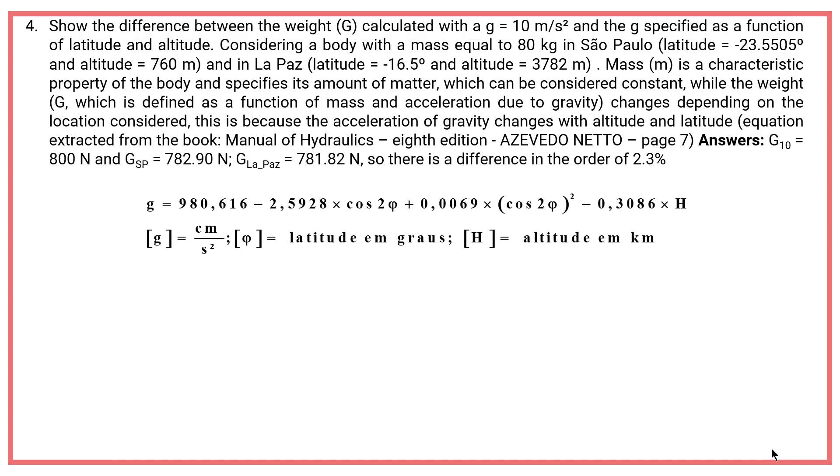Mass, m, is a characteristic property of the body and specifies its amount of matter, which can be considered constant, while the weight, g, which is defined as a function of mass and acceleration due to gravity, changes depending on the location considered. This is because the acceleration of gravity changes with altitude and latitude. Equation extracted from the book Manual of Hydraulics, 8th edition, Azevedo Neto, Page 7.